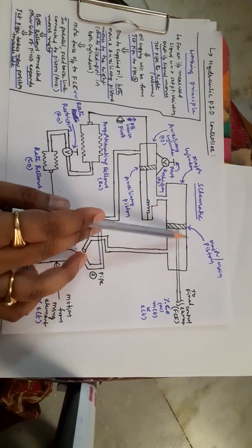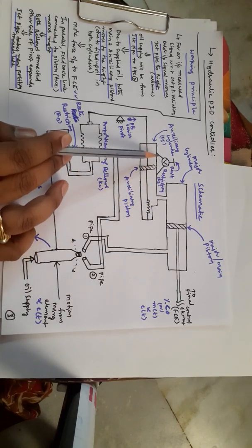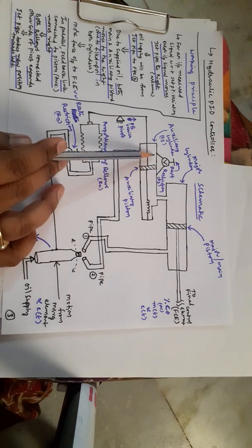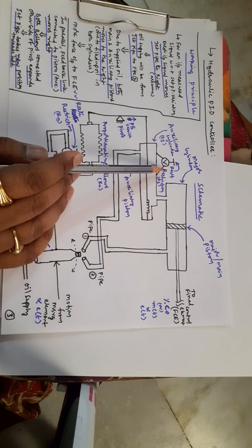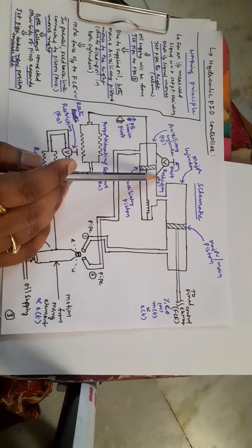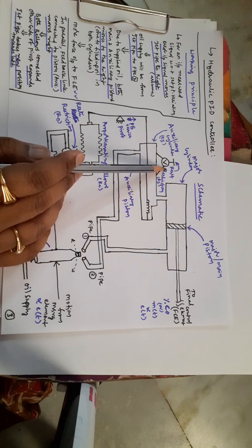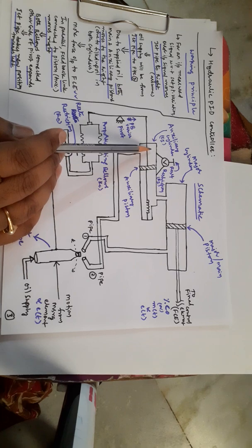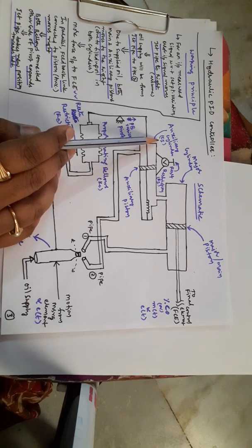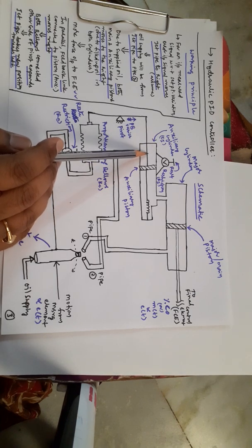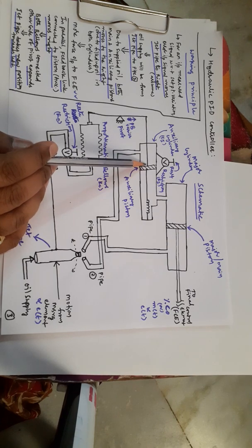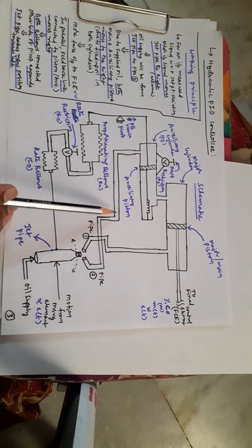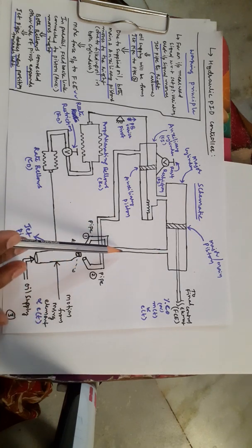This component is referred to as the auxiliary cylinder. The main use of the auxiliary cylinder is to obtain an output in terms of integral action. For integral capacitance we require a storing capacity, and for resistance we require a restriction. This valve is the reset restriction valve, giving an R_I value, and the cylinder provides the reset capacitance or integral capacitance. This is the auxiliary piston, whose movement is forwarded to the main piston.